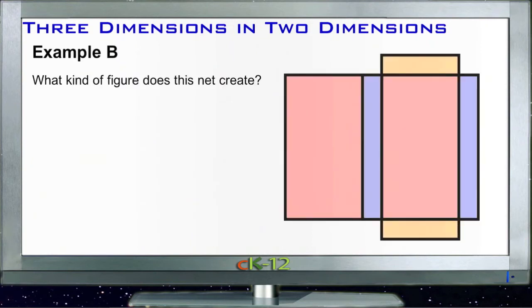This one here says, what kind of figure does this net create? What we see here is that we have two each of the sides that match, or I'll call it the same color so we can keep them straight. We have one big flat side and then what looks like a divider between that flat side and the other one, and then another divider that would separate those two.